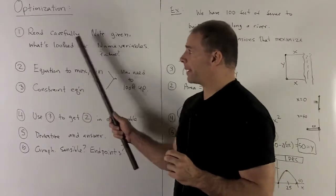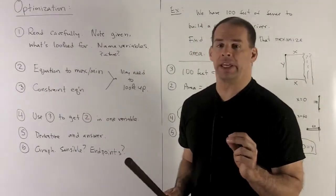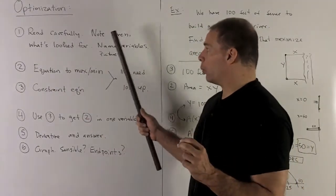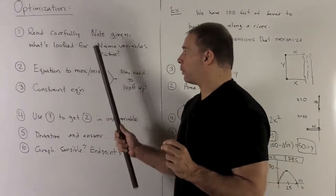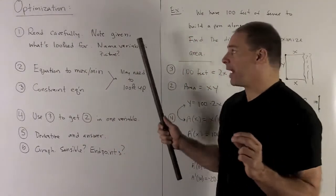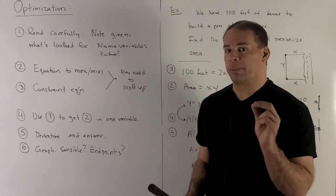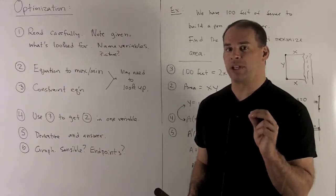The first thing, read your problem carefully. We want to note what's given, what we're looking for. We may have to name variables, and you may want to draw a picture just to clarify what's being asked for.